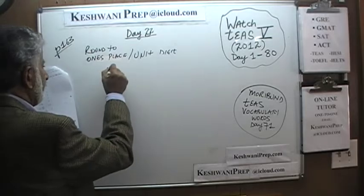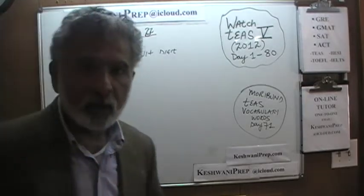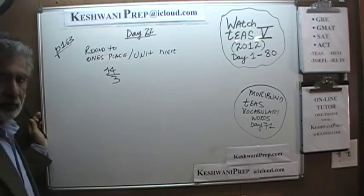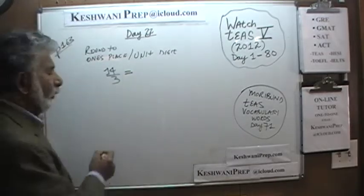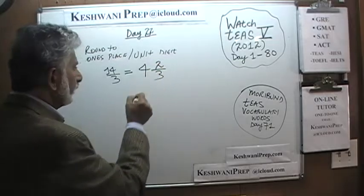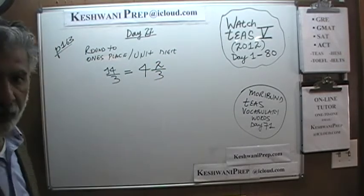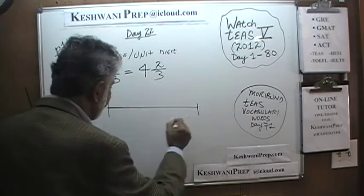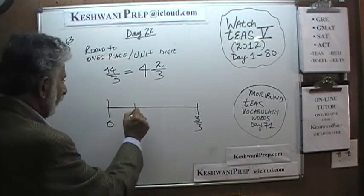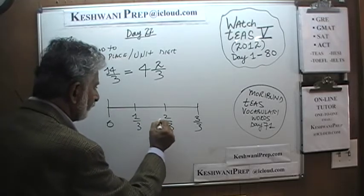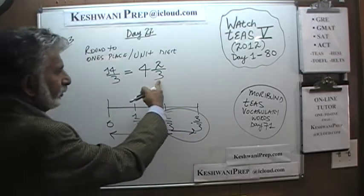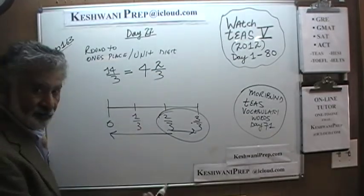How about 14 over 3? Now we are getting into mixed numbers, as opposed to fractions. The first thing we need to do is rewrite this as a mixed number. 14 divided by 3 is 4 with a remainder of 2, so it becomes 4 and 2 thirds. 2 thirds, when rounded to the nearest one's, becomes 1 — because 2 thirds is closer to 3 thirds than it is to 0. So 4 and 2 thirds rounded to the nearest one's becomes 5.